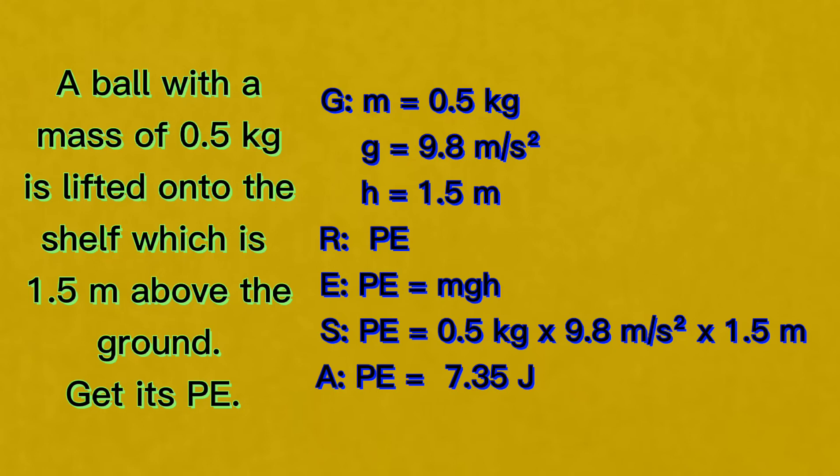The solution is, potential energy equals 0.5 kilograms times 9.8 meters per second squared times 1.5 meters. And the gravitational potential energy of a ball is 7.35 joules. Again, joules is the unit of energy, whether it is kinetic or potential energy.